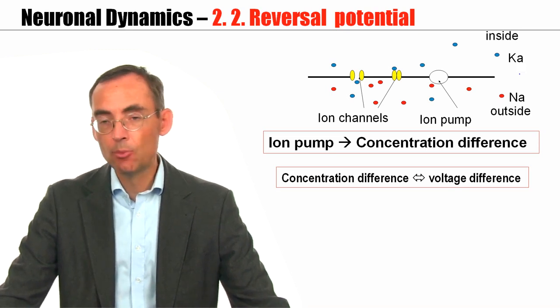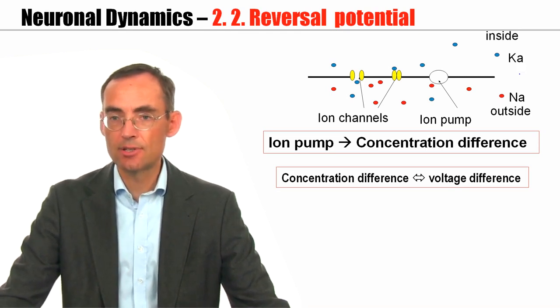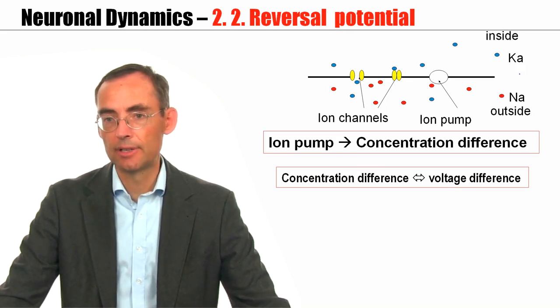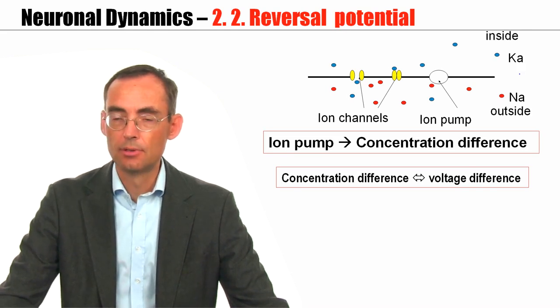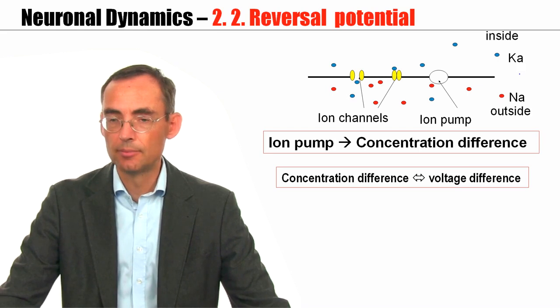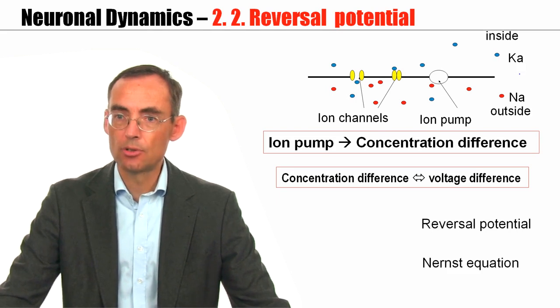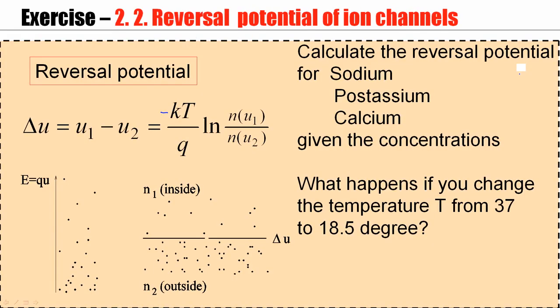To summarize: the concentration difference gives rise to a voltage difference via the reversal potential. This voltage difference is described by the Nernst equation and is specific for each ion type. For each ion type we have a reversal potential, which is the potential at which that ion type would be at equilibrium. Now, to get more familiar with these notions, please take five minutes, take out a calculator, type in concentrations for sodium and potassium, and try to calculate the reversal potential for each ion type. An additional question is: how would the calculated reversal potential change if you go from a temperature of 37 degrees to half that temperature?